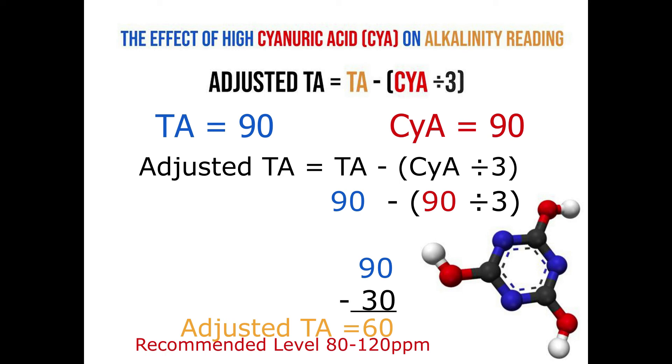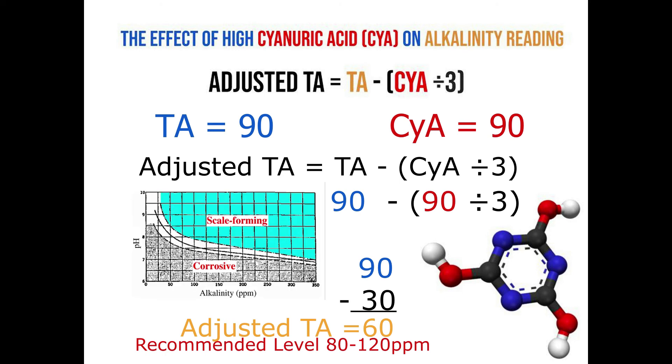You might have thought that you were fine up here when you had the 90, but you would be wrong. Because your true adjusted alkalinity is actually 60 and that's what we have to use to determine if our water is balanced or not. Meaning corrosive or scale forming. Is it hungry or is it over stuffed?